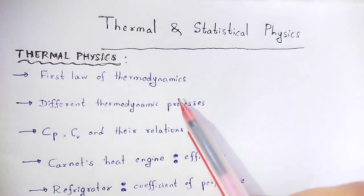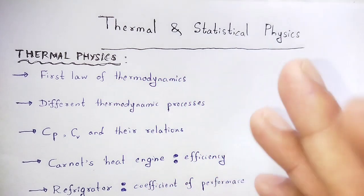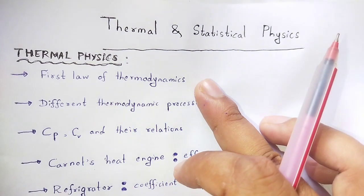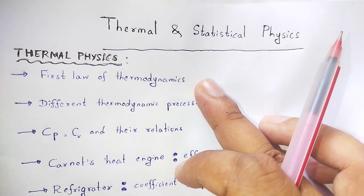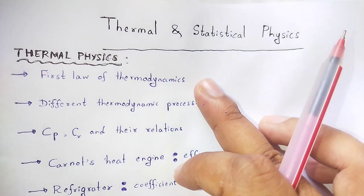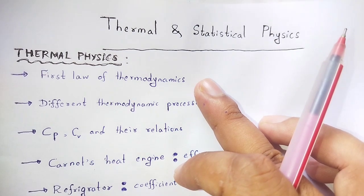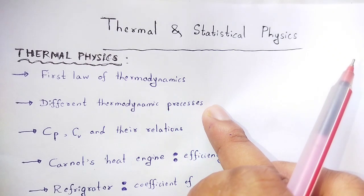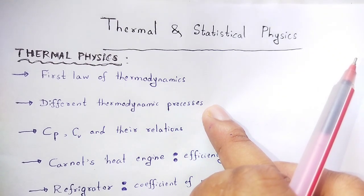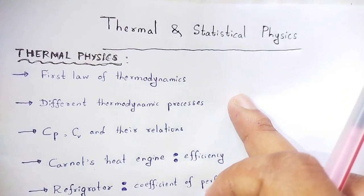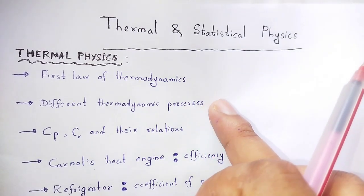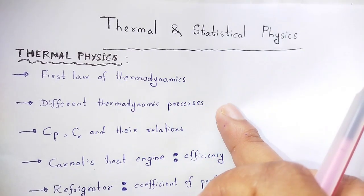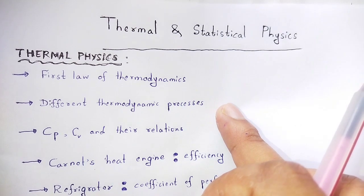First law of thermodynamics: dU is equal to dQ plus P dV, and its physical significance. Different thermodynamic processes: adiabatic, isobaric, isochoric, reversible, irreversible, cyclic - the concept of these processes.